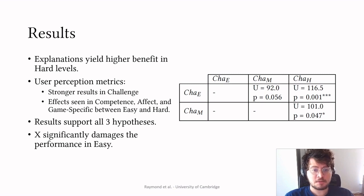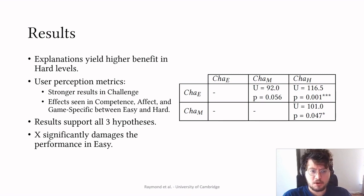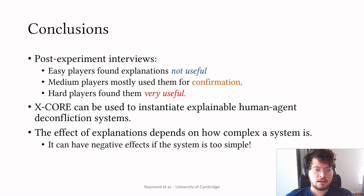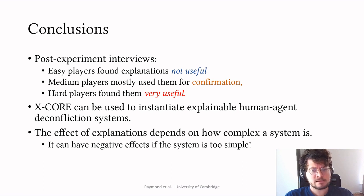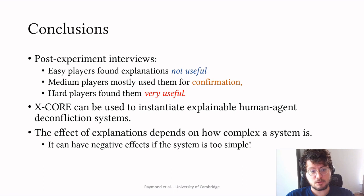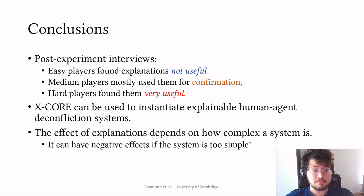In user perception metrics, we measure perception of challenge, competence, affect-related questions such as frustration and irritation, and game-specific questions to measure understanding. We managed to distinguish populations between easy and hard for all measurements, with particularly strong results in challenge where medium and hard also presented significant differences. All our hypotheses are supported by the results. Post-experiment interviews collected spontaneous comments: most easy-level participants said explanations were not helpful or were distracting; medium-level players used them to confirm their thought process; hard-level players said explanations were crucial. These findings map to the taxonomy by Rosenfeld and Richardson, suggesting that the need for explanations relates not only to trust and acceptability but also to system complexity.